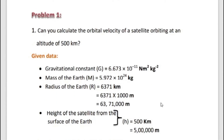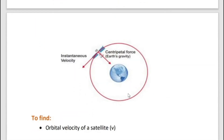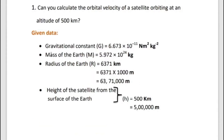Can you calculate the orbital velocity of a satellite orbiting at an altitude of 500 km? Altitude means it is a distance in the vertical or upward direction. Orbital velocity is the horizontal velocity that has to be imparted to a satellite at a determined height so that it makes a circular orbit around the planet.